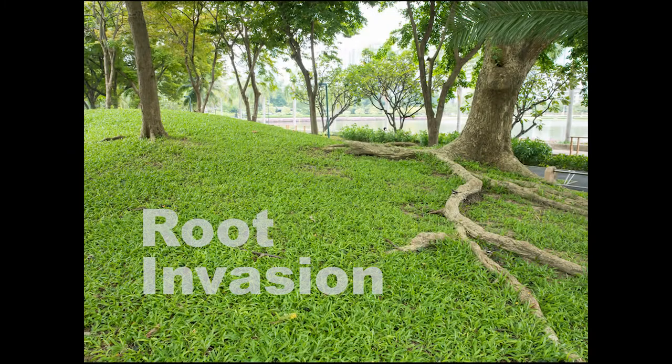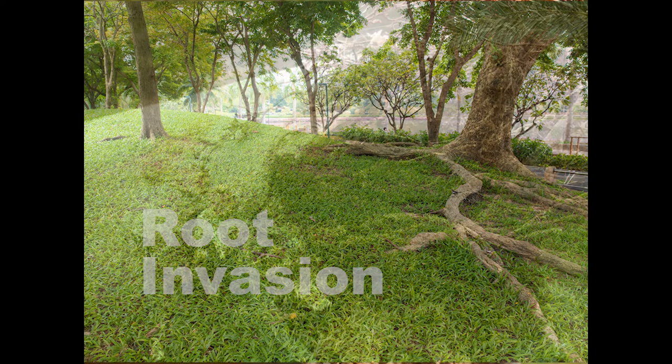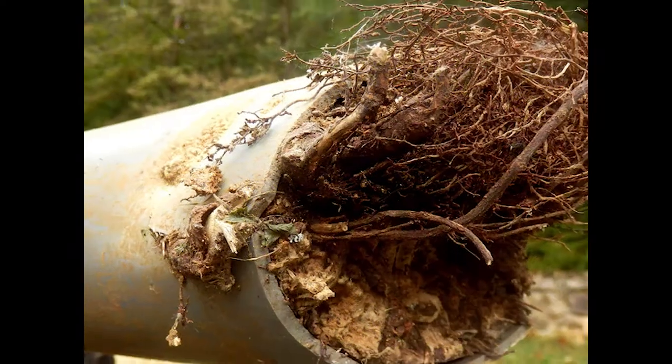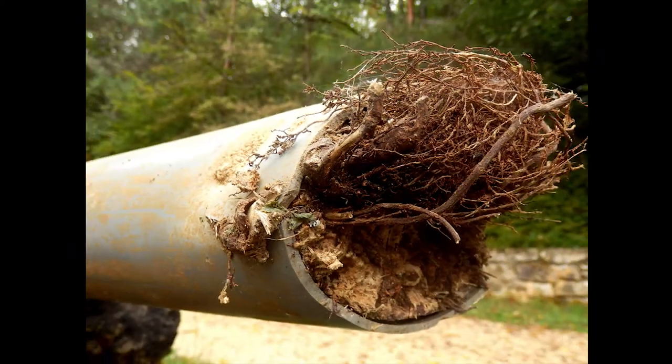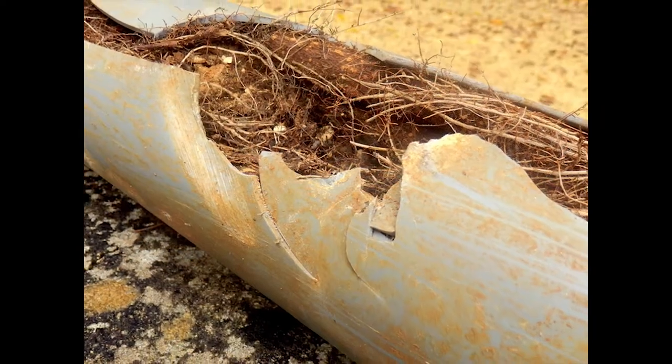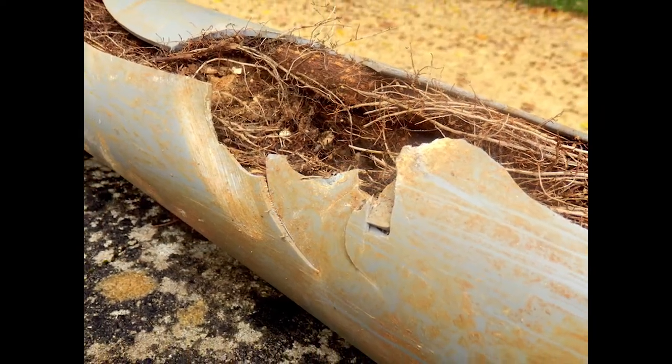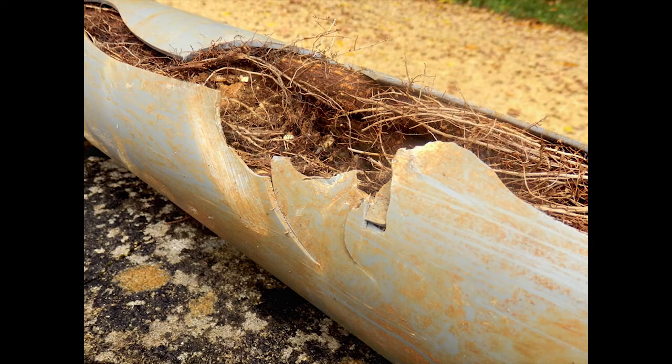The first is root invasion. As trees grow, so do their roots. These roots can infiltrate plumbing system pipes, causing backups and blockages, not to mention the breaking and cracking of pipes.